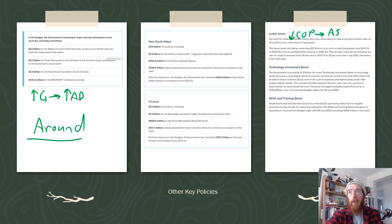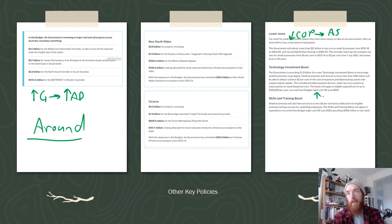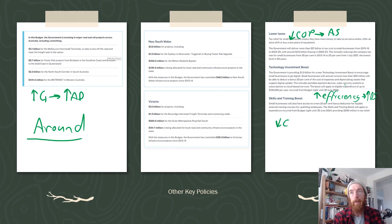There is also a technology investment boost, with the government providing $1 billion for new technology investment, hoping to increase efficiency and productivity and therefore aggregate supply. Additionally, there are skills and training boosts, with a 20% bonus deduction for eligible external training courses for upskilling employees. That will lower cost of production and should also increase productivity and efficiency, as businesses are incentivized to get their workers more skills — either way increasing aggregate supply.